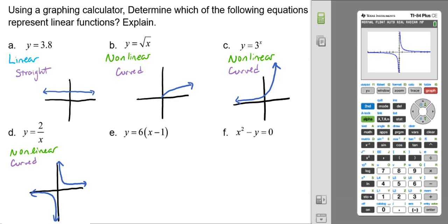Let's go ahead and put in letter E. So we're going to go in, we'll clear out what we have. So 6 parenthesis, x minus 1, close parenthesis, and then I'll graph it. And that looks pretty straight as we're moving through. Nice straight line there. So that would be linear.